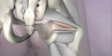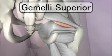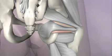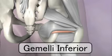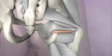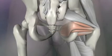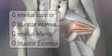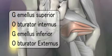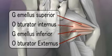Right next to the obturator internus are the two small gemelli muscles — the gemelli superior and inferior. These muscles are filled with sensory cells that pick up the position of the femur, and they are thought to be more of a sensory feedback system than prime movers. The two gemelli muscles and the two obturator muscles are often referred to as the GOGOs — a great acronym to remember their order from top to bottom.